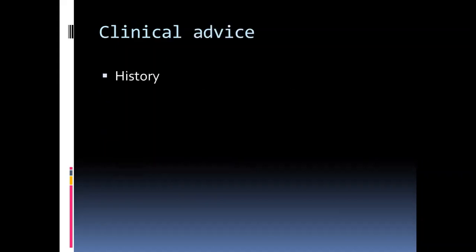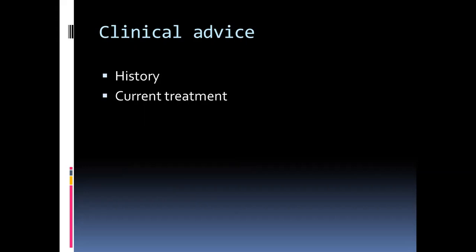Clinical advice: a good history is what will help both the clinician and the laboratory in deciding an appropriate treatment for the patient. Once the lab is provided with the appropriate history and the current treatment being used for the patient, they can use this information to employ the correct diagnostic test and use the correct antibiotics to check for susceptibilities in a sample, and also advise the clinician on what the most appropriate choice of treatment is.